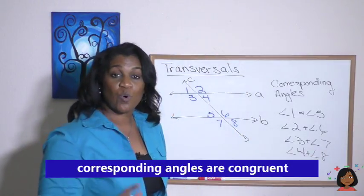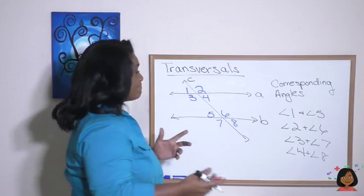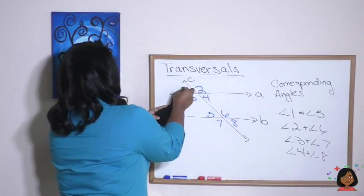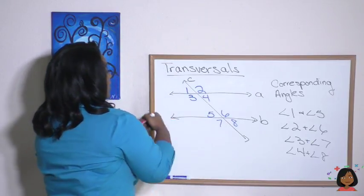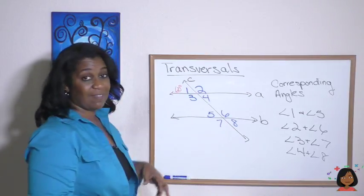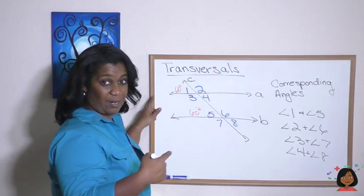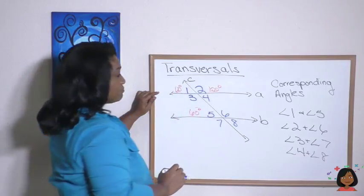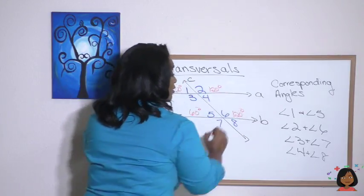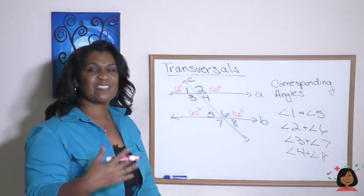Why is this useful? Corresponding angles are congruent. So if angle 1 is 60 degrees, then angle 5 is also 60 degrees. And if angles 1 and 2 are supplementary, angle 2 is 120 degrees. Since angles 2 and 6 are corresponding, they must be congruent, so angle 6 is also 120 degrees. Knowing corresponding angles are congruent helps you find the degrees of other angles in this figure.